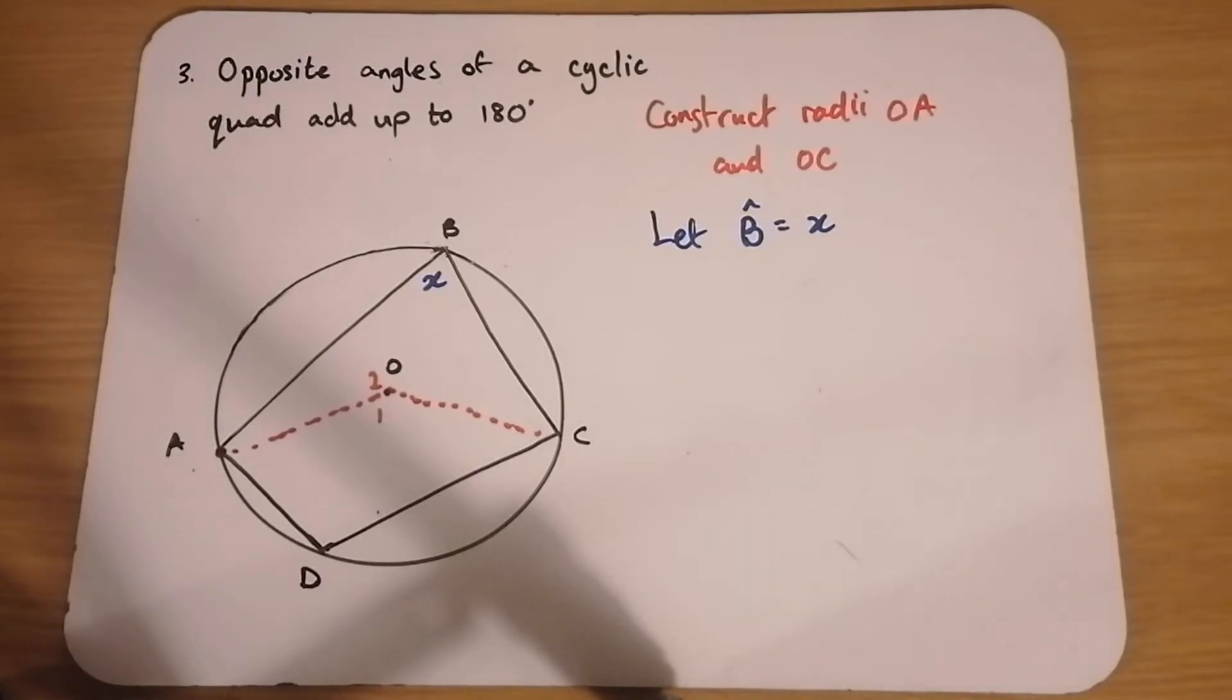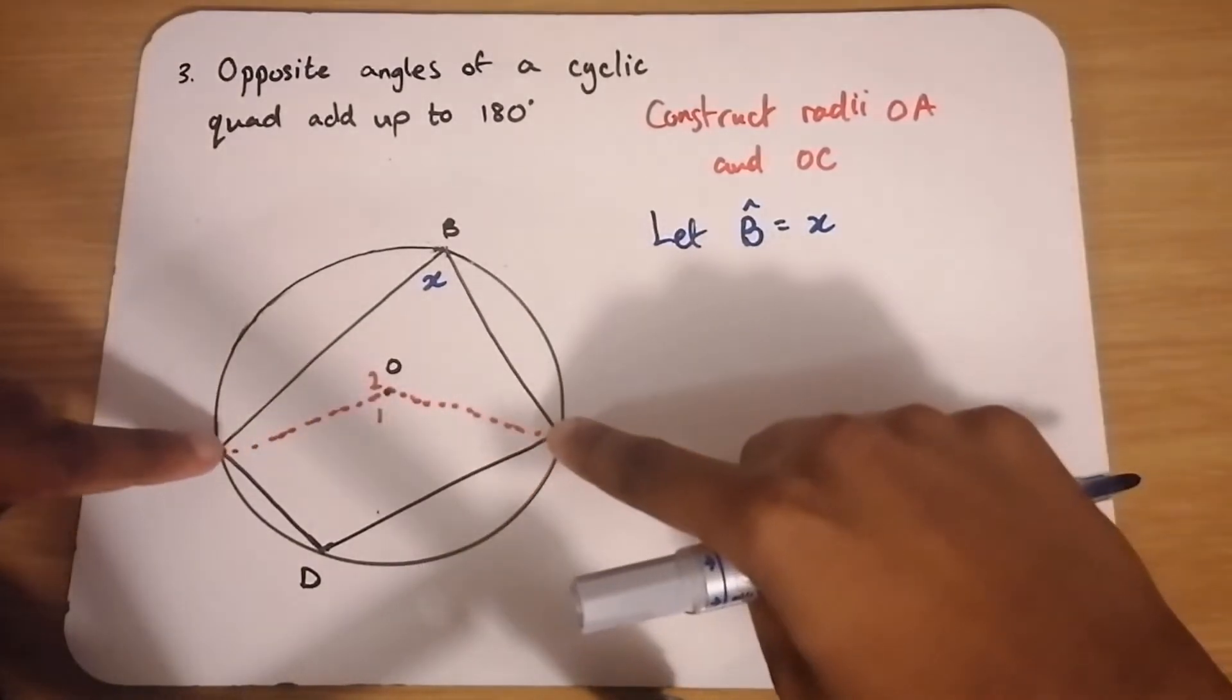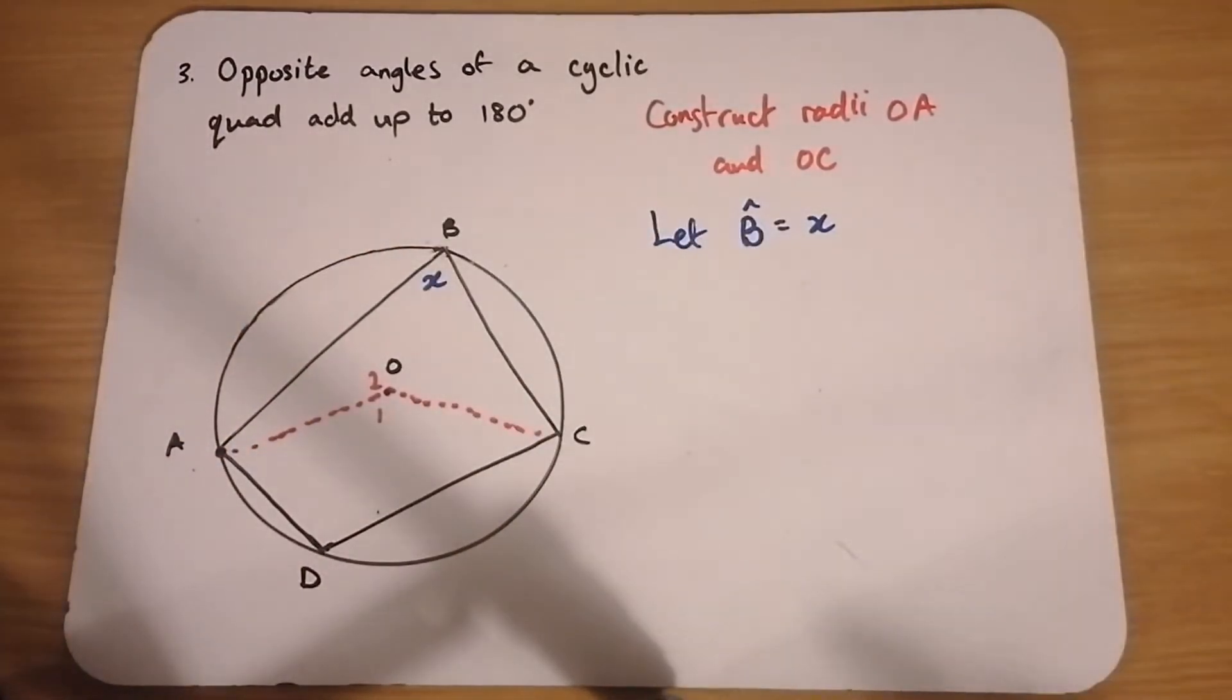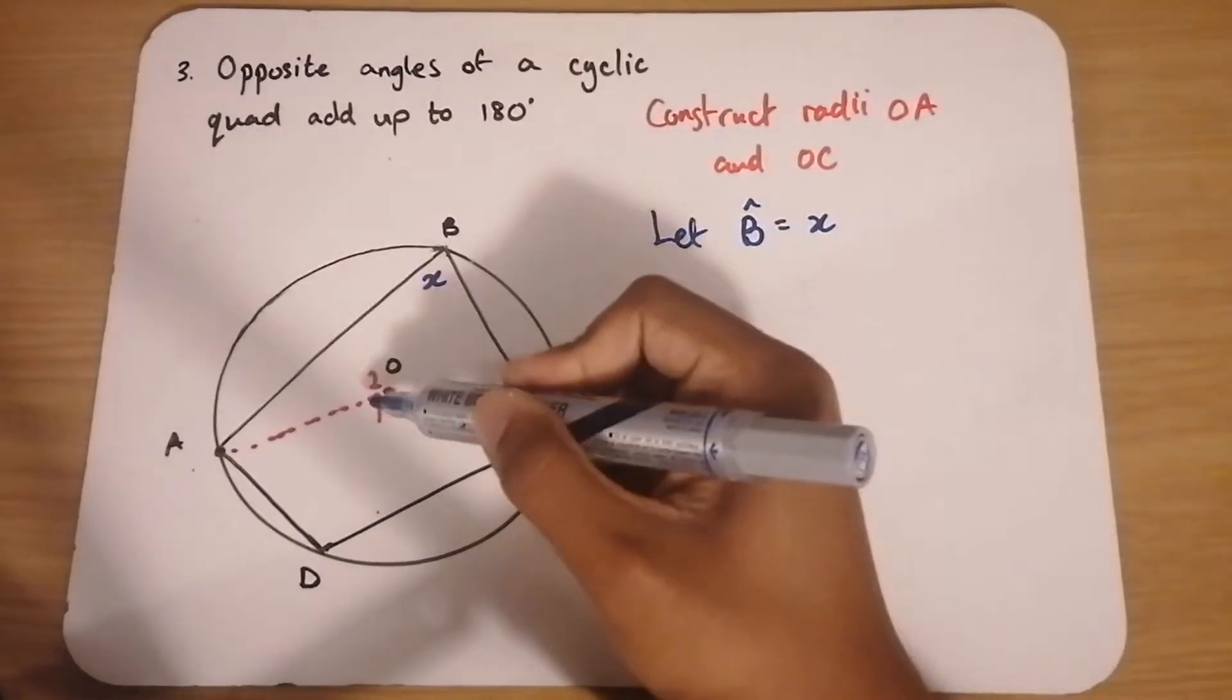So if B is equal to X, we know that from the previous theorem, the angle at the center should be 2 times the angle at the circumference. So angle O1 is equal to 2X.